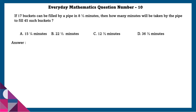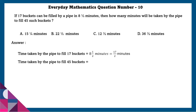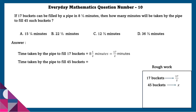Question 10: If 17 buckets can be filled by a pipe in 8 and 1/2 minutes, then how many minutes will the pipe take to fill 45 such buckets? Time taken to fill 17 buckets is 17/2 minutes. By cross multiplication to find time for 45 buckets, x equals 22 and 1/2 minutes.